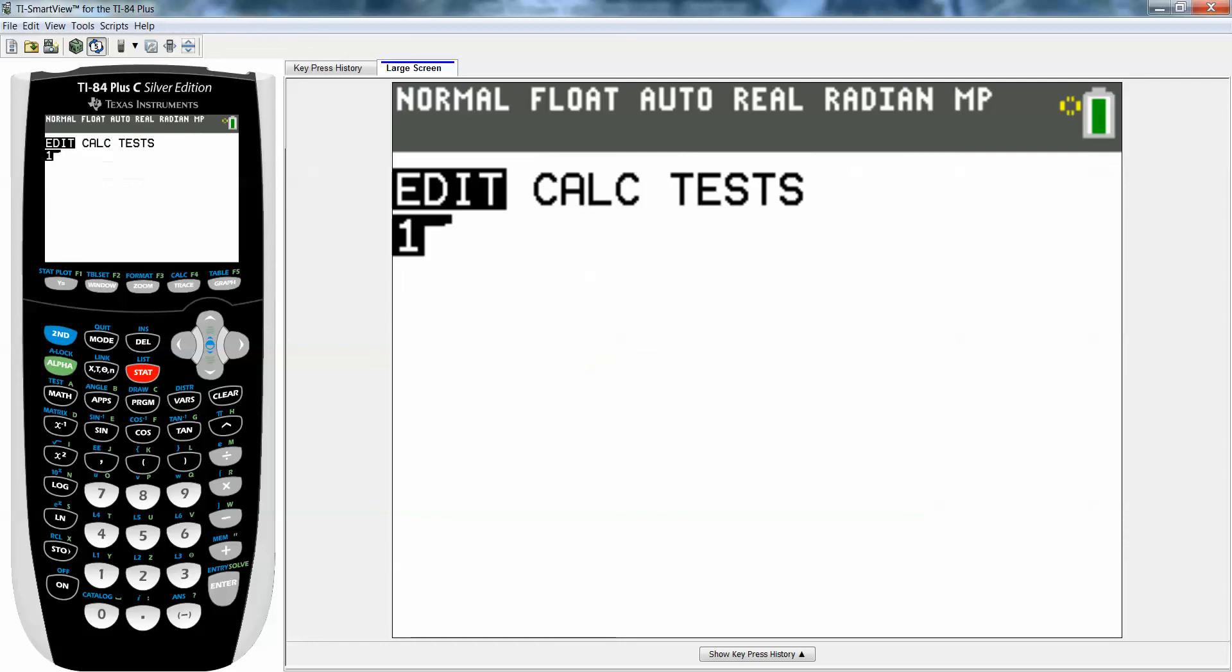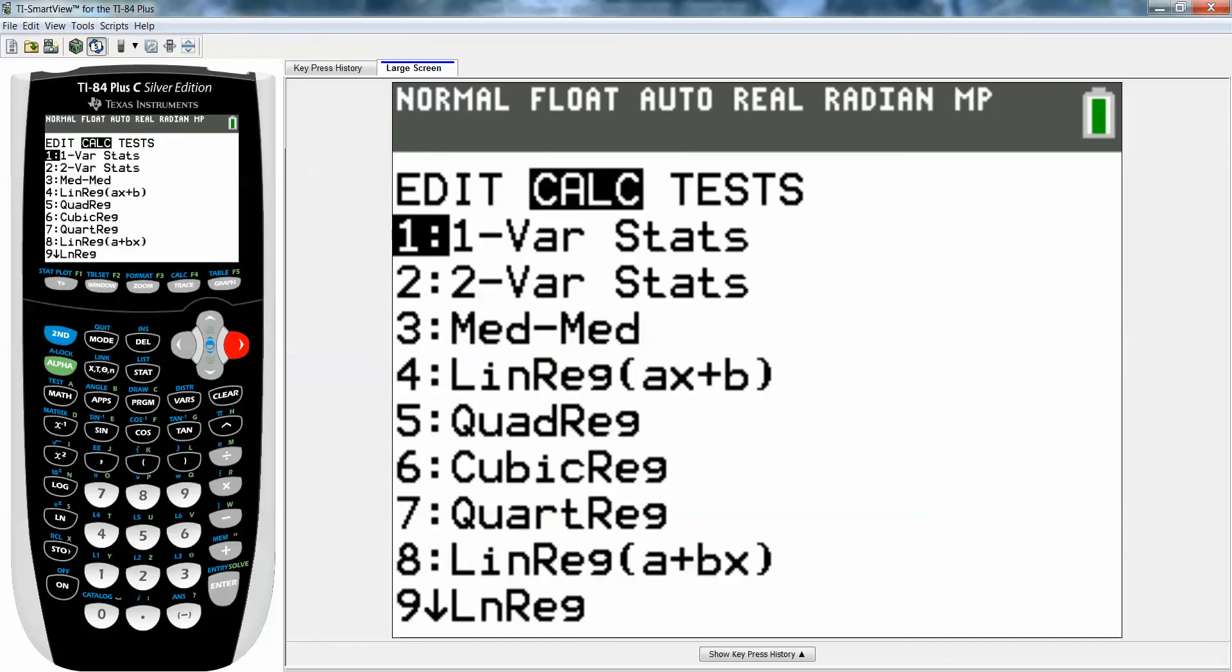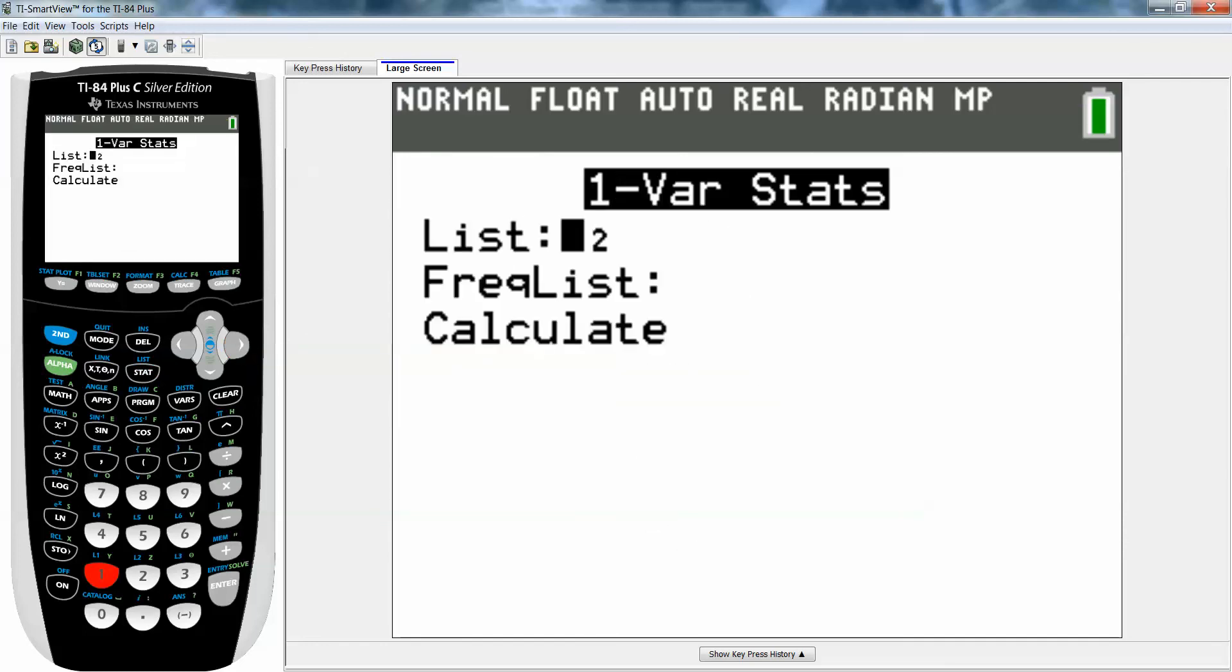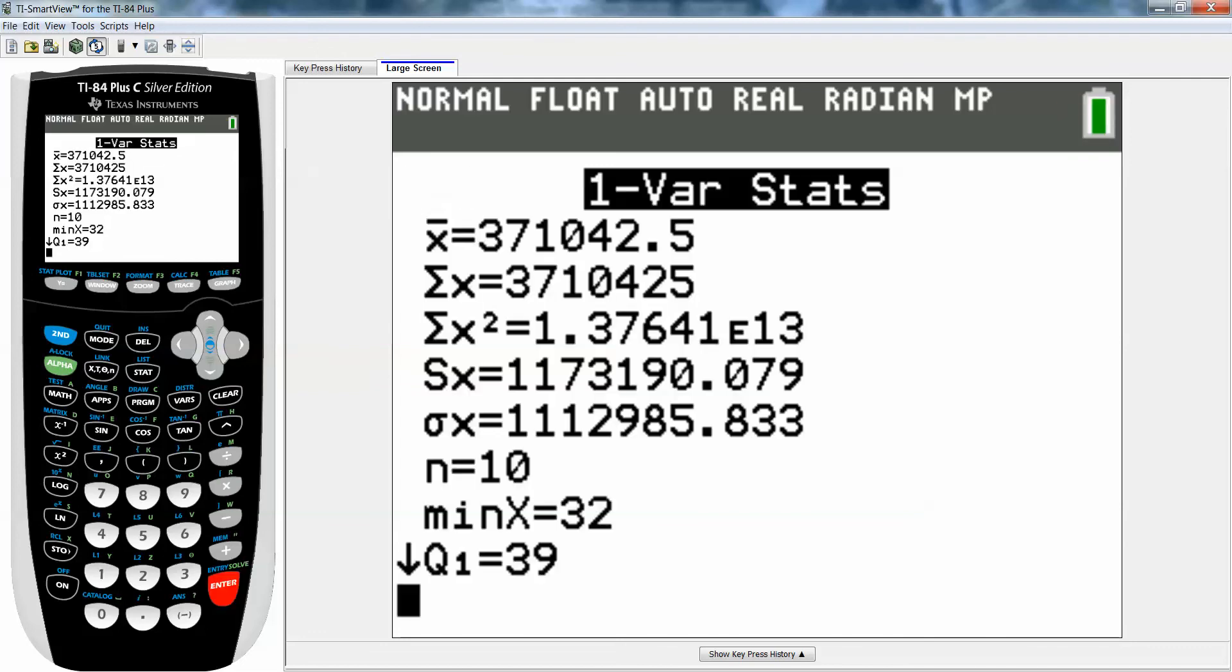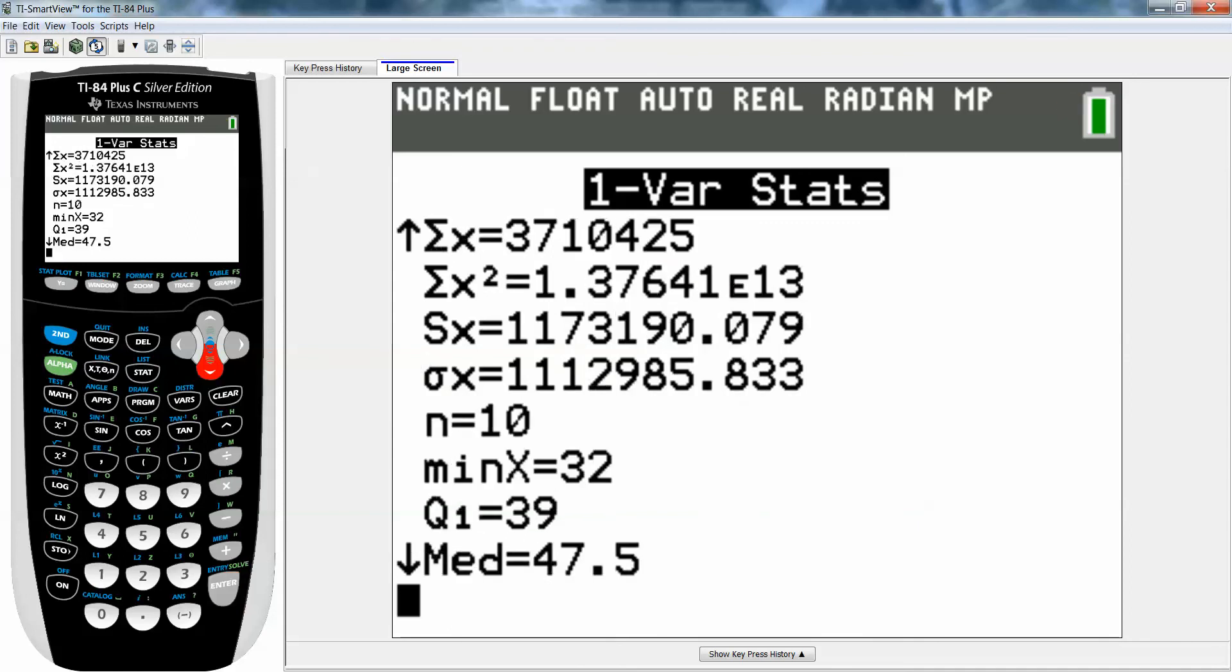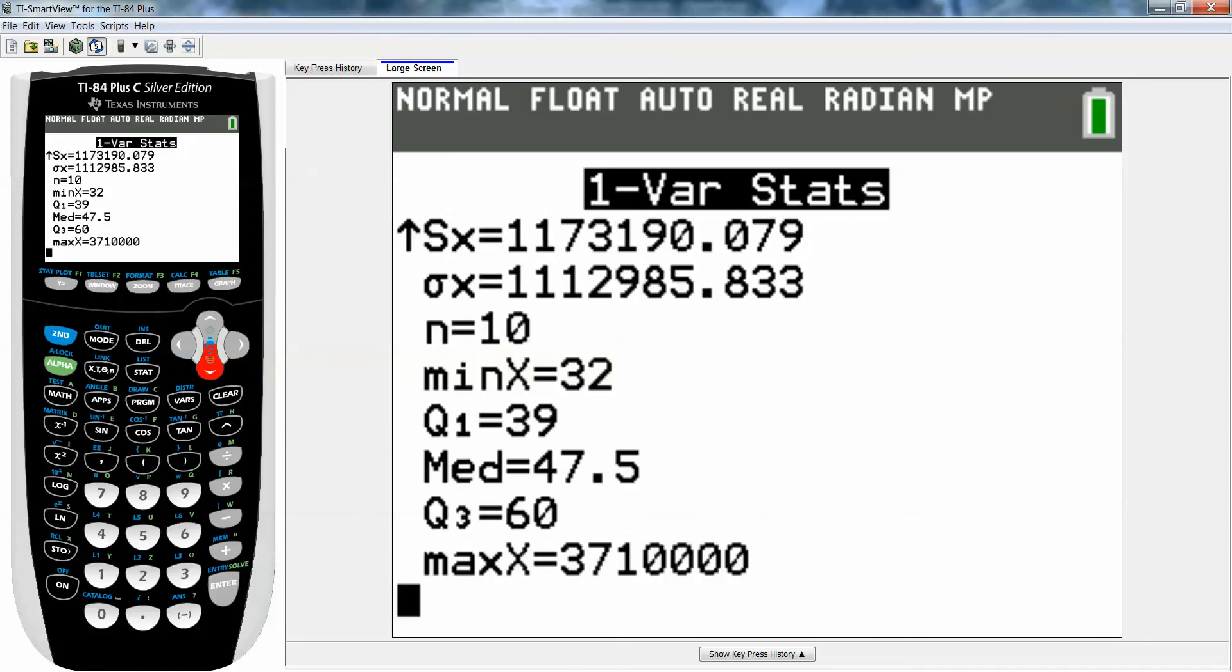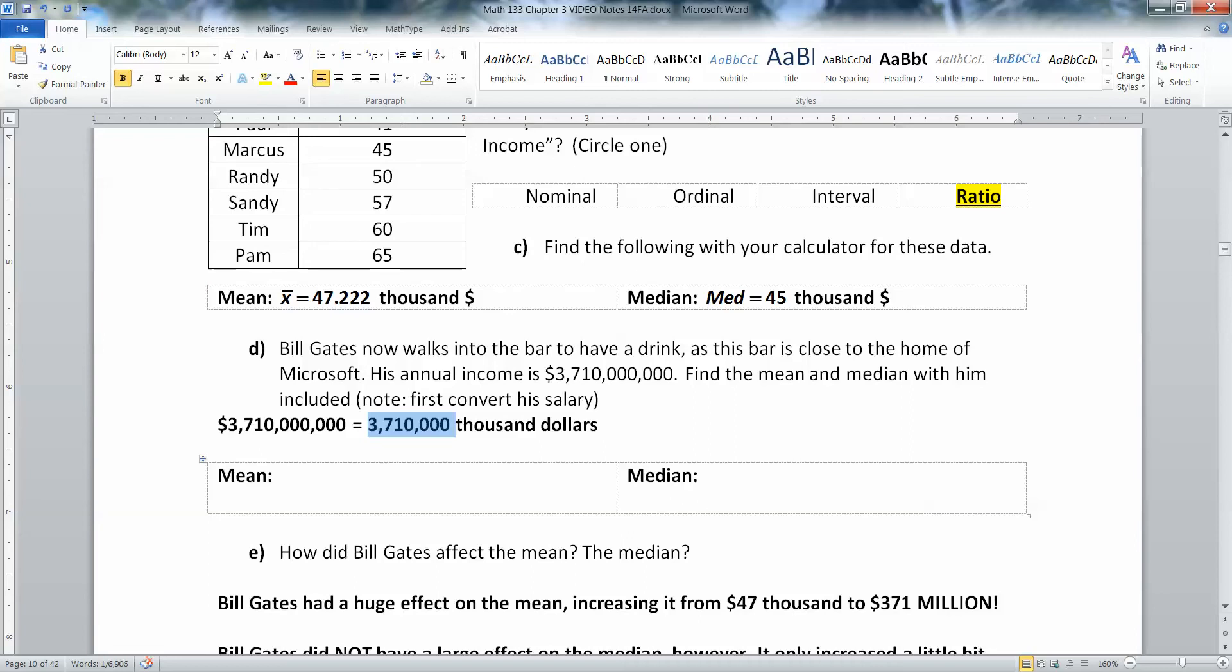And now I'm going to press stat, calculate, one variable stats. L2 is fine because that's still where my data are. And go down to calculate. And there's the mean right there. 371,042.5 thousand dollars. And the median is only 47.5. So let me type those in.